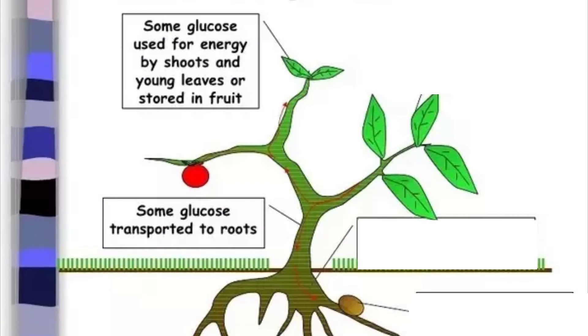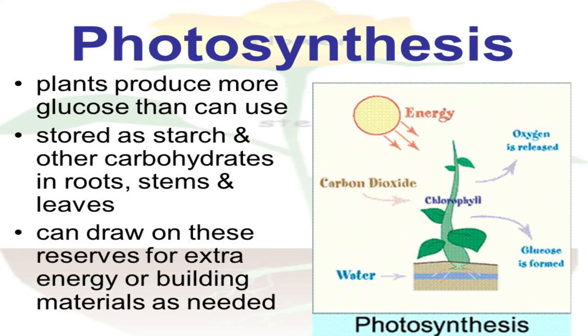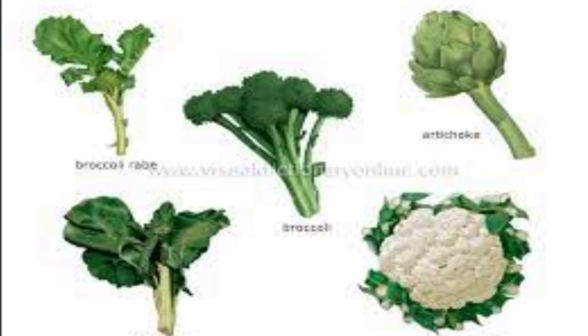The water in the plant veins carries the sugars. When the sugars reach the storage parts they are changed into starch. Plants can store the starch in leaves — for example, cabbage, spinach, and lettuce.